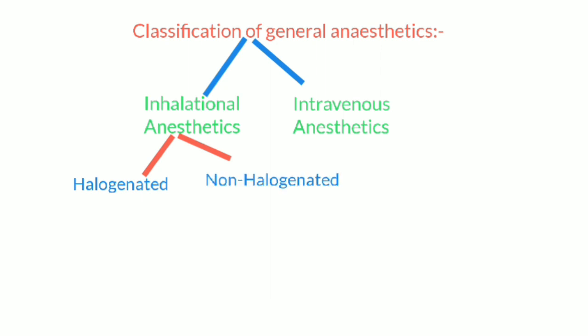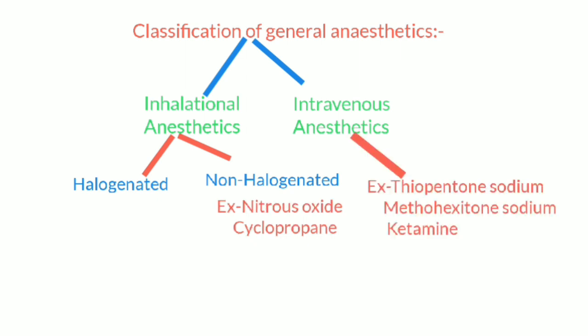Examples of halogenated anesthetics: halothane, isoflurane. Examples of non-halogenated anesthetics: nitrous oxide, cyclopropane. Examples of intravenous anesthetics: thiopental sodium, methohexital sodium, and ketamine.